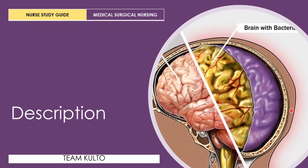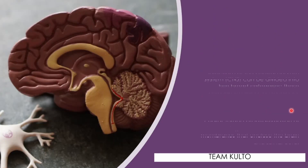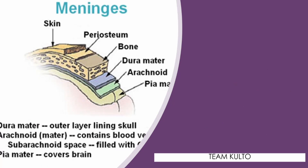Let's describe what meningitis is — just a refresher. This is an infection of the central nervous system, which can be divided into two broad categories: those primarily involving the meninges, and those primarily confined to the parenchyma, called encephalitis. Meningitis is a clinical syndrome characterized by inflammation of the meninges — the three layers of membranes that enclose the brain and spinal cord. We'll cover what those layers are in the next slides.